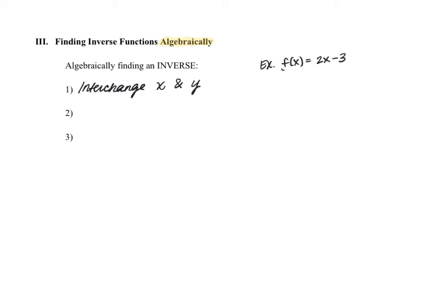Remember, f of x is just a fancy way of writing y. So I would change that to y equals 2x minus 3. And then I would just interchange x and y, so that would become x equals 2y minus 3.